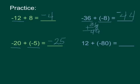12 plus a negative 80. We have more negatives than positives. Different signs, so find the difference. So we have 68, but it's negative.